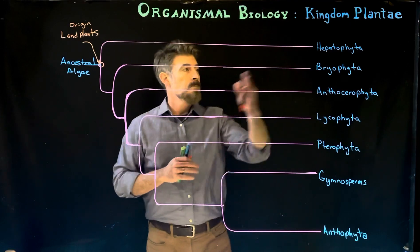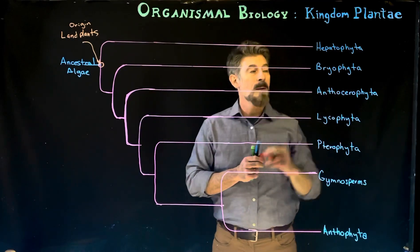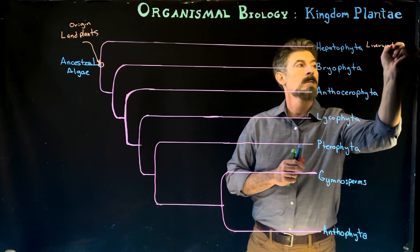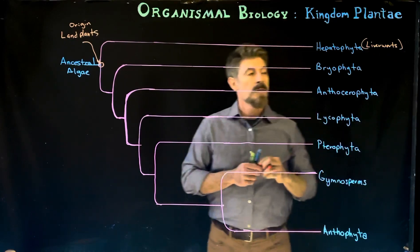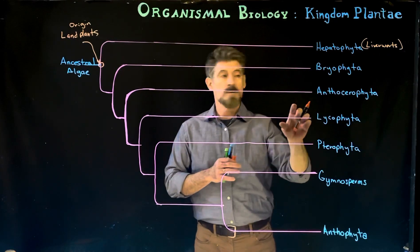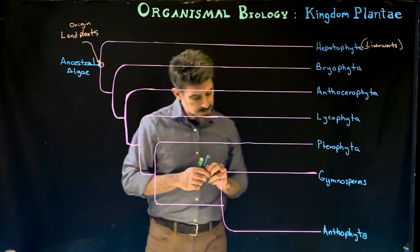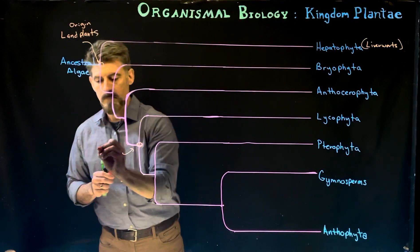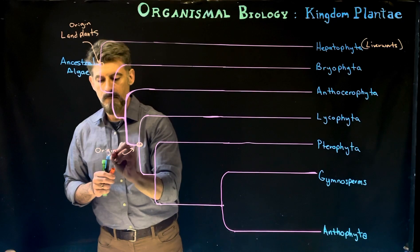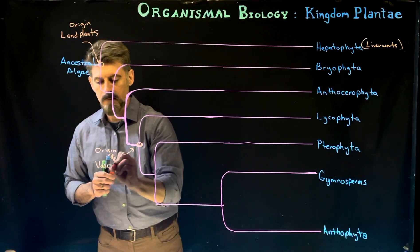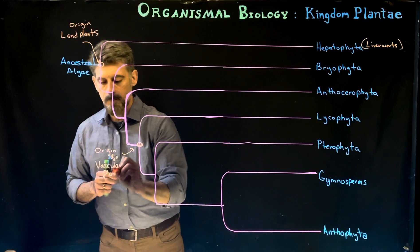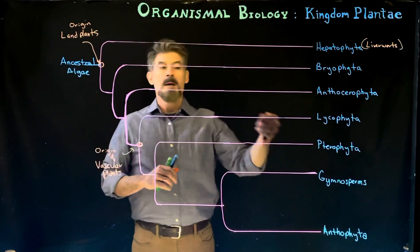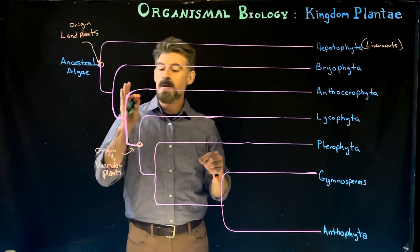Starting from the top, one of the first groups here are called Hepatophyta. They're also known as liverworts. They are non-vascular plants. So here, we're going to have the origin of vascular plants, for all these groups here. That means these first three up top here are non-vascular.